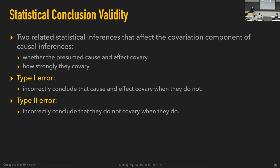Type two errors: you incorrectly conclude that there isn't a relationship between variables when in reality there was one. We also know this as false negatives — in reality there is a relationship, but you're falsely missing it with your experiment, you're not able to discover it. These are two kinds of errors that will haunt you for the rest of your data science career — there's no escaping this.